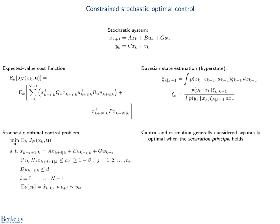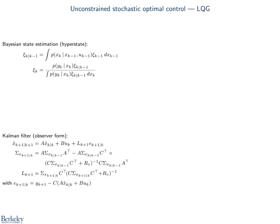Here we have the Bayesian framework in terms of the hyperstate, which is a probability distribution for the state conditioned on the current information. In linear systems, control and estimation are generally treated separately, which turns out to be optimal under mild assumptions. One case in which the separation principle holds, meaning control and observer design do not interact, is linear quadratic Gaussian control.